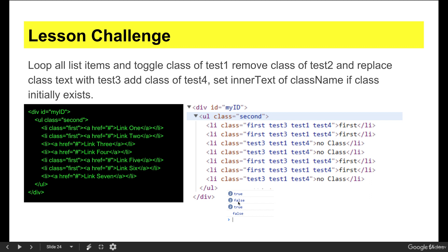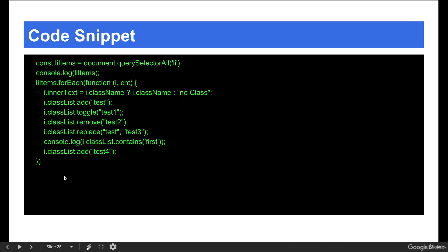In the console, you can see the Boolean values for whether the class exists: true, true, false, false, true, true, false for each of the elements. The first two have a class, the next two are false so they don't have a class, the next two do have a class, and the last one is false.